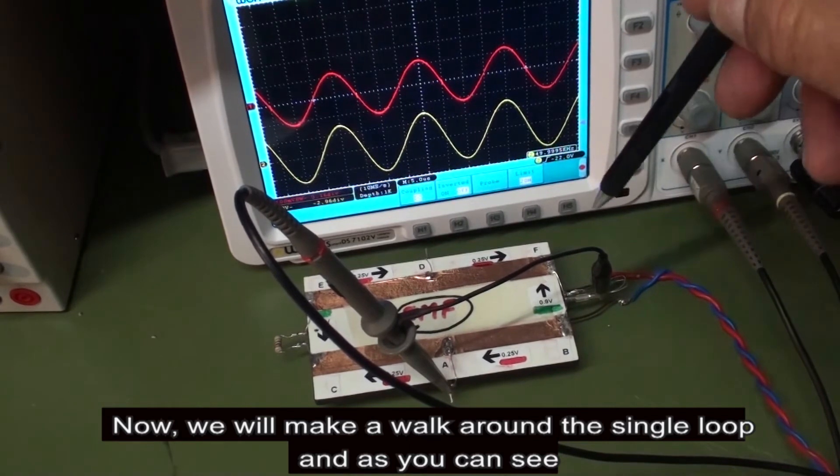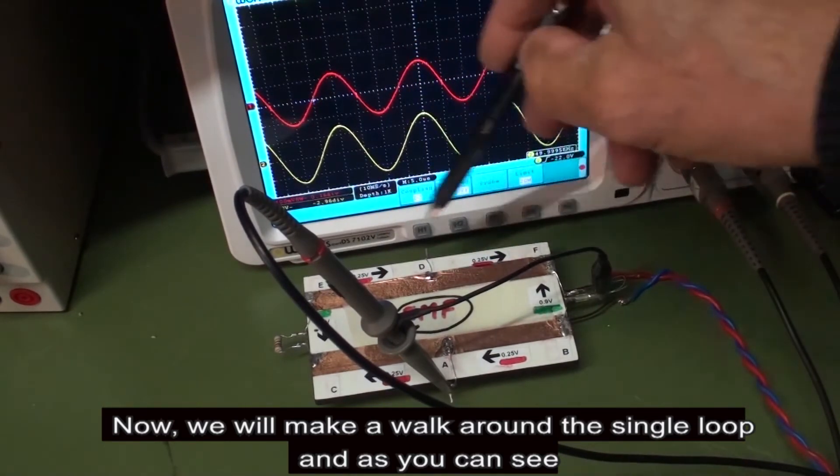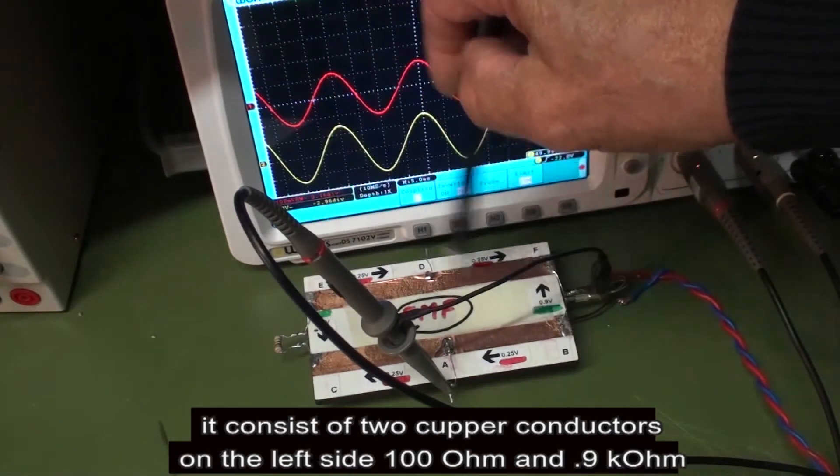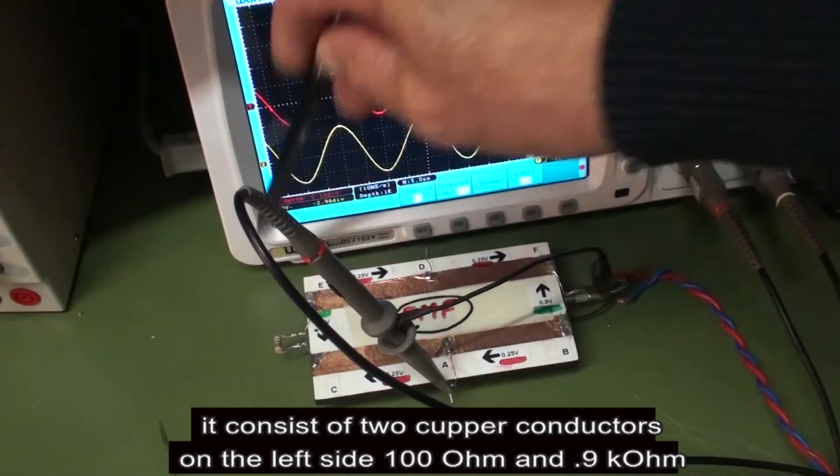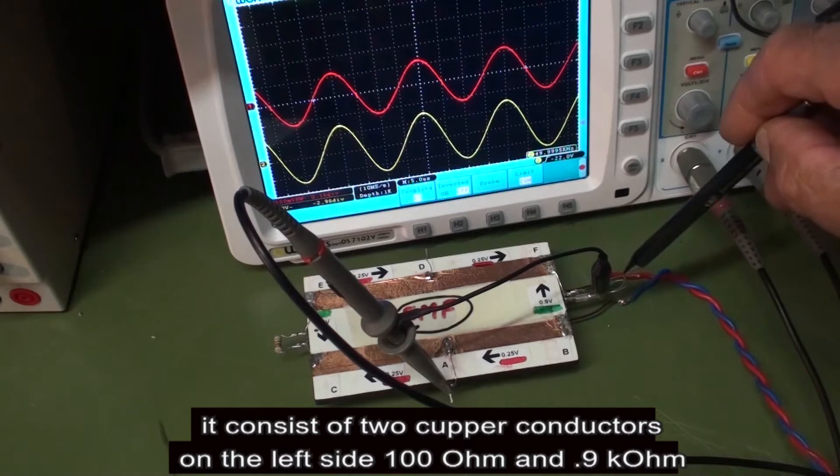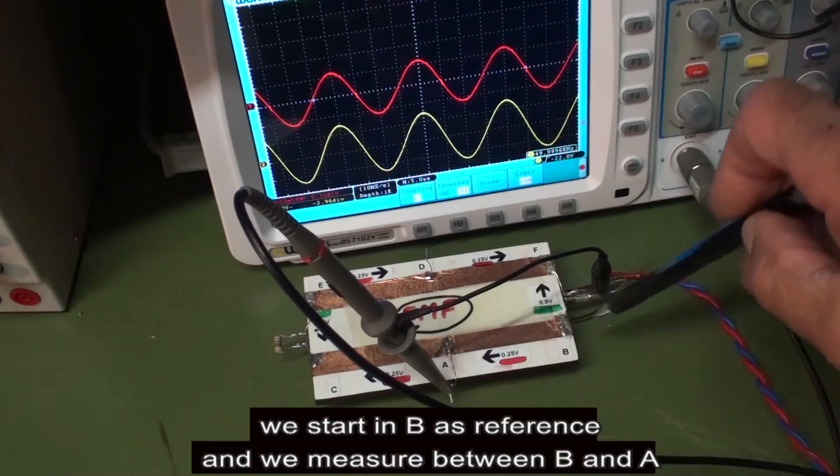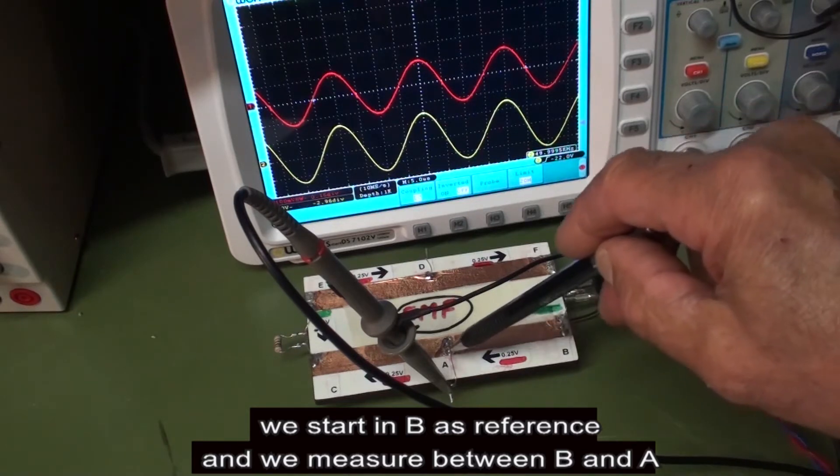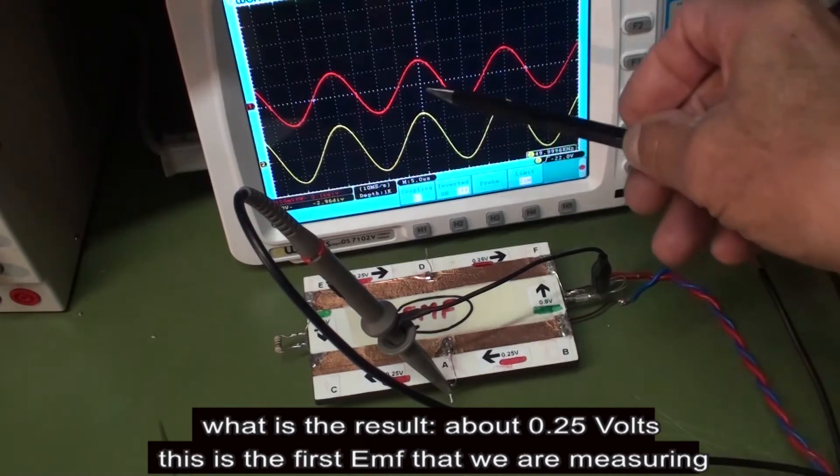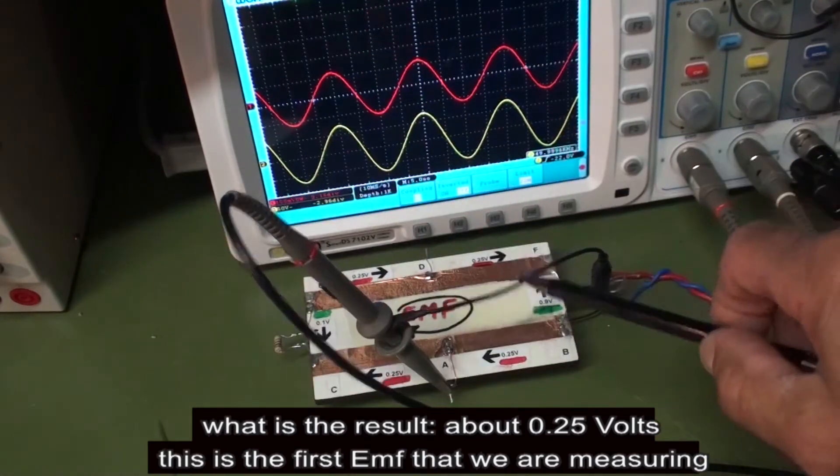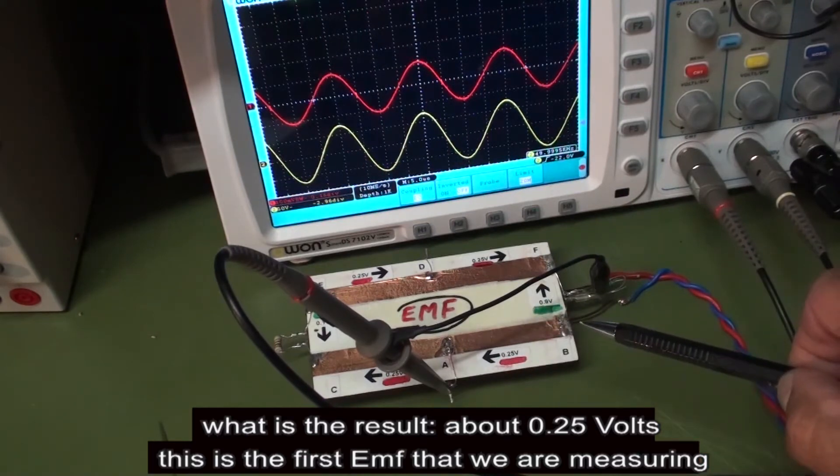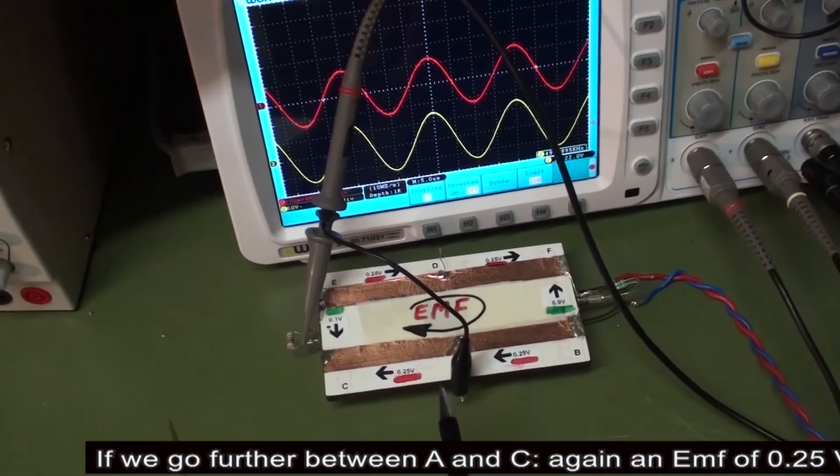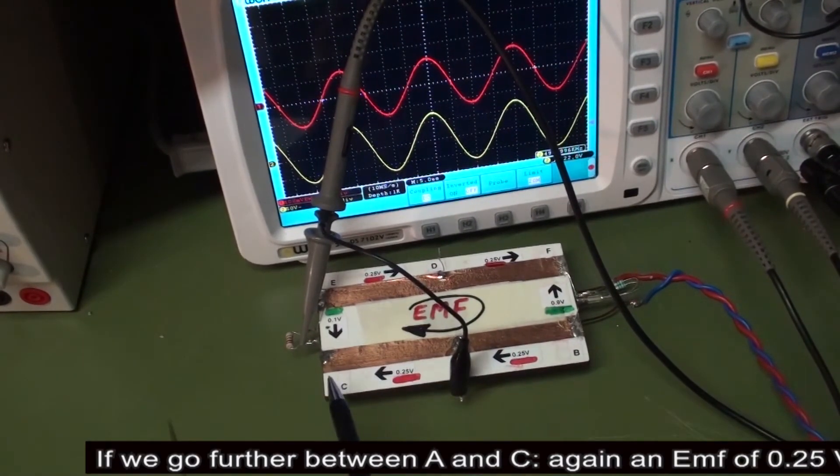Now we will make a walk around the single loop. As you can see, it consists of two copper conductors. On the left side we have the 100 ohms, and on the right side we have the 0.9 kilo ohm. We start in B as reference and measure between B and A. What is the result? About 0.25 volts.